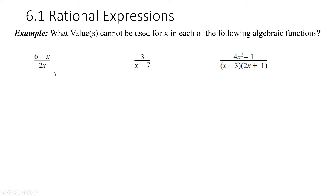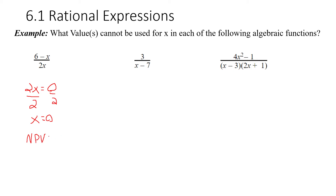Looking at an equation like this, we want to find out what value for x would make the denominator equal to zero. The strategy is to take just the denominator that has a variable in it and set it equal to zero. We solved this simple algebraic equation for x — divide both sides by two, and zero divided by two is zero. So if you substitute zero for x, two times zero gives you zero. The non-permissible value for 2x is zero.